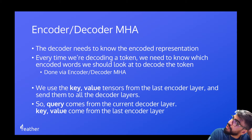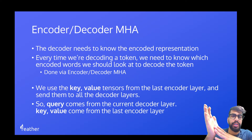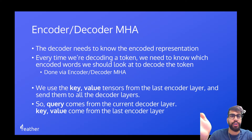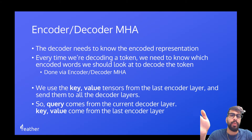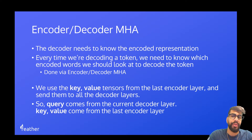So why do we do this? We're working with a sequence-to-sequence architecture, or an encoder-decoder architecture. We have some input and we get an encoded representation of this input, and from this encoded representation we want to decode whatever our target actually is. And every time we're decoding a token, we need to know which one of the encoded words we should look at to decode that token. This is done in the encoder-decoder multi-head attention step for the transformer.